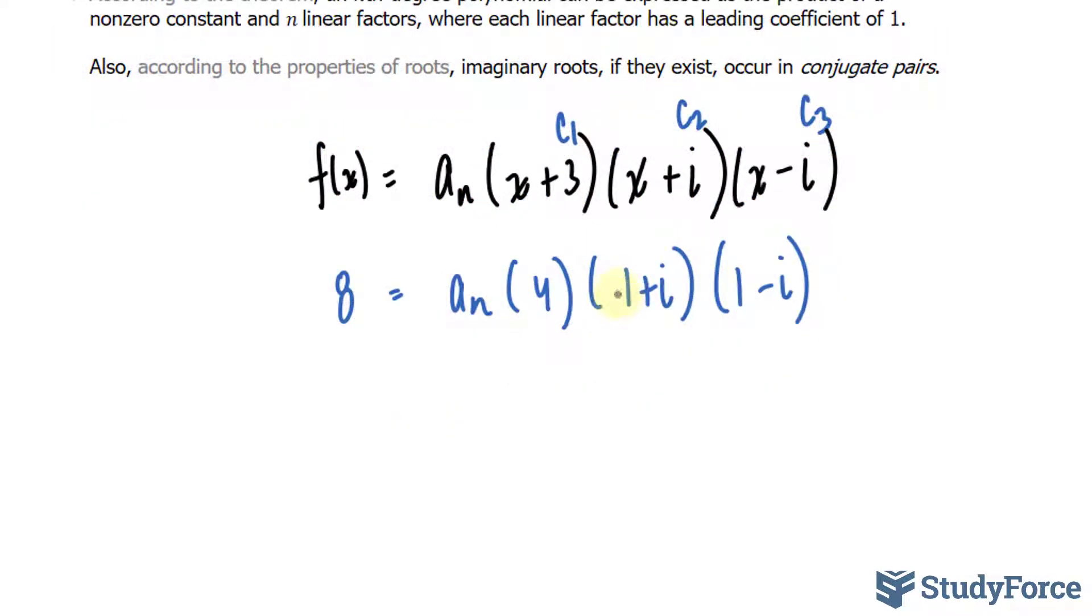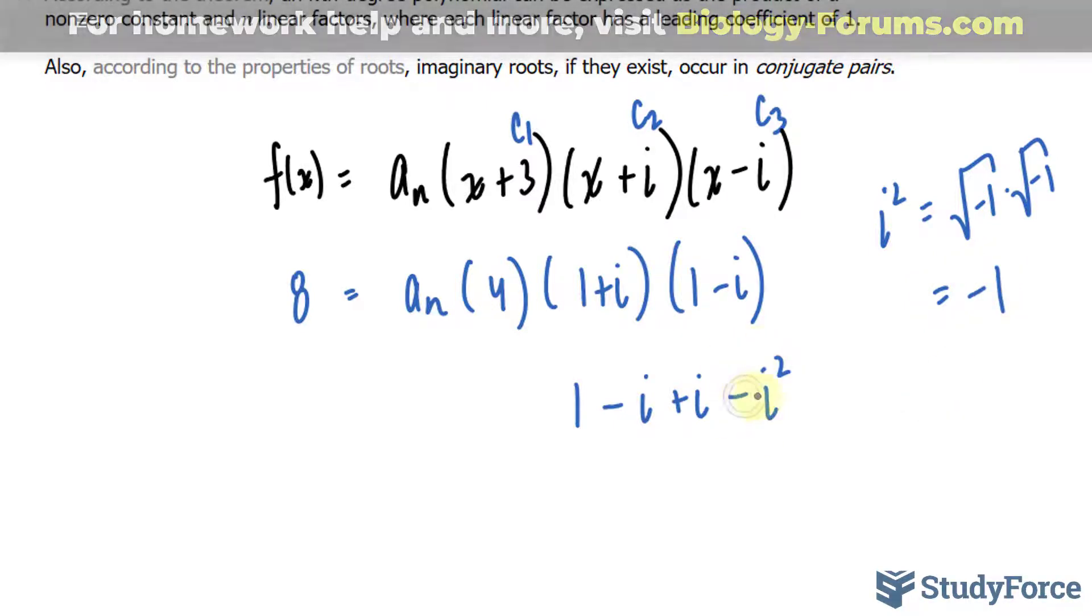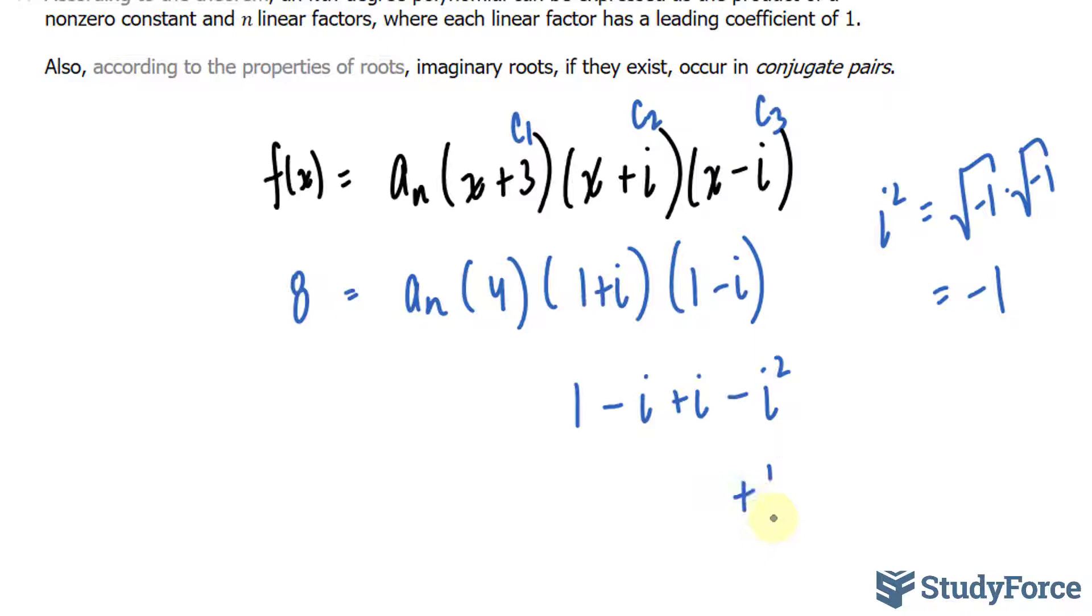I'll multiply these two first. I get 1 plus -i and positive i, minus i^2. i^2 is equal to the square root of -1 times the square root of -1. Multiplying these two out, you should end up with -1. So this becomes negative times -1, and that's equal to positive 1. These two cancel out. We have 1 + 1 = 2.